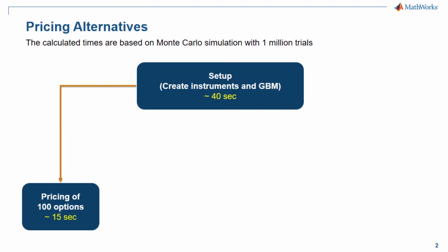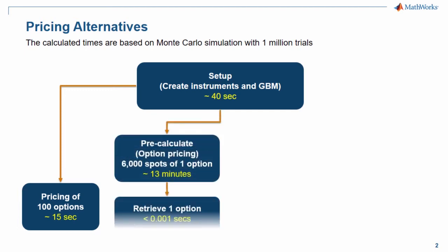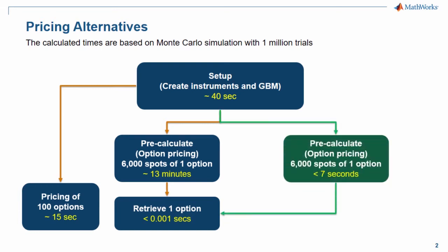To perform option pricing in a real-time trading environment, we can pre-calculate the option prices and deltas, then retrieve the data later in less than a millisecond per option. Because of Monte Carlo simulation, it would take you 13 minutes to pre-calculate 6,000 scenarios per one option. If you have 100 options, it would cost you almost one day to complete the pre-calculation. What I am going to show you next is how to perform the pre-calculation much faster.